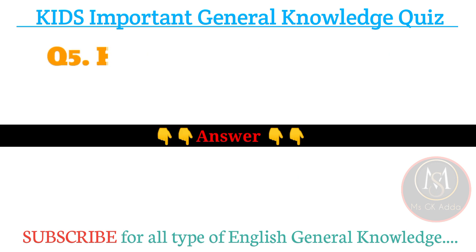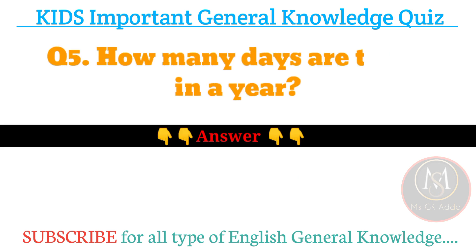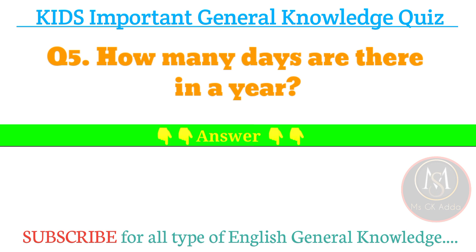Next, number five: how many days are there in a year? Answer: three hundred sixty-five days.